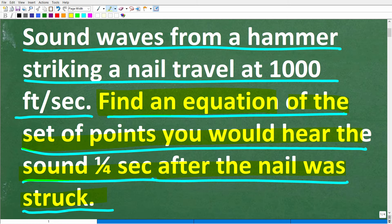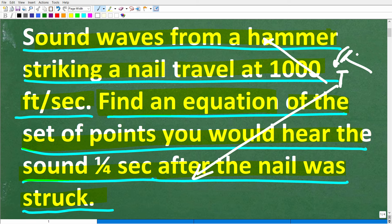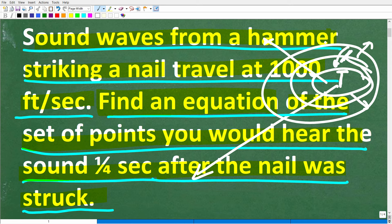Let's take one more look at this problem. We have a hammer and it's going to strike this nail, obviously creating some sound. The sound waves from a hammer striking a nail travel at 1,000 feet per second. Now here is our lovely little hammer and here's the nail. When the hammer hits the nail, how is the sound going to travel? Let's assume this is happening in a big open field. The sound is not going to go just one way — it's going to go in all directions. It's going to emanate out like a circle.